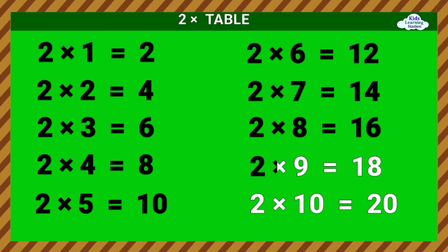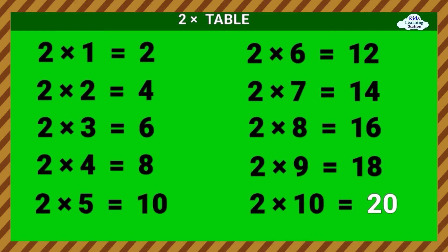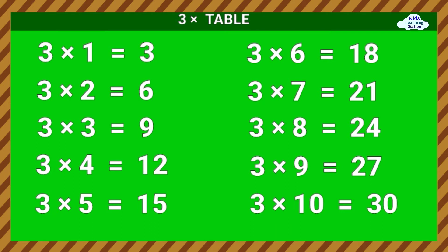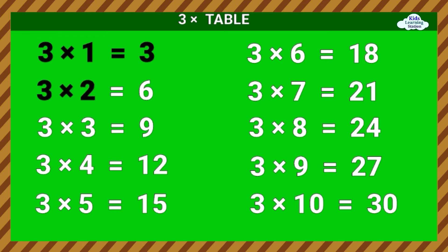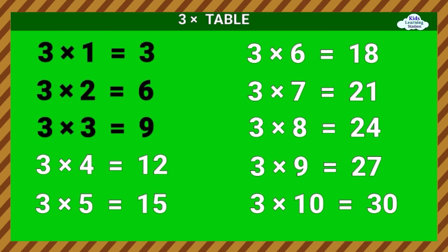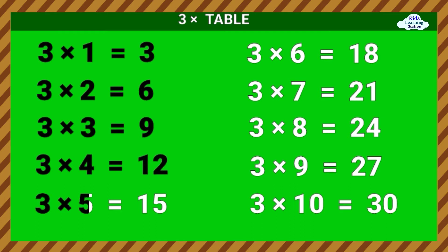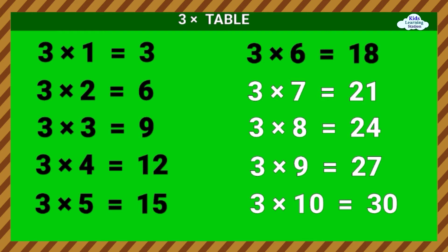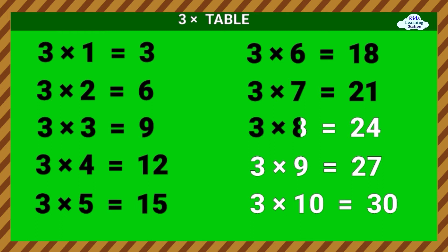2 times 9 equals 18. 2 times 10 equals 20. Three times table. 3 times 1 equals 3. 3 times 2 equals 6. 3 times 3 equals 9. 3 times 4 equals 12. 3 times 5 equals 15. 3 times 6 equals 18. 3 times 7 equals 21. 3 times 8 equals 24.